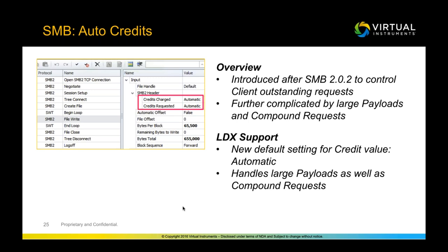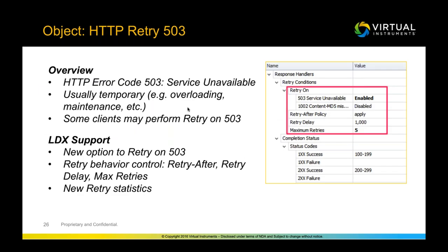On the SMB side, we've made a very exciting improvement to credits. Previously, you had to manually calculate the credit value — even using calculators and math on paper — and this got complicated for large payloads or compound SMB requests. In this latest release, we made the default automatic. You no longer have to figure out the credit value; it will be automatically calculated. This handles large payloads as well as compound requests. If you've been discouraged by the manual credit calculation process in previous releases, you'll find this very encouraging.